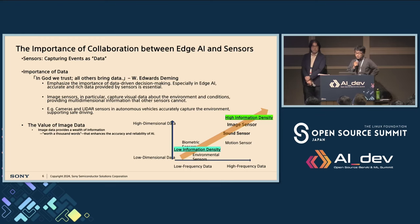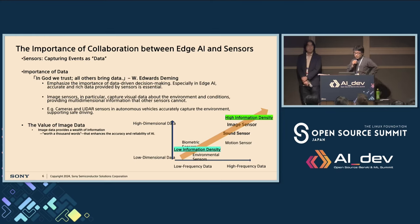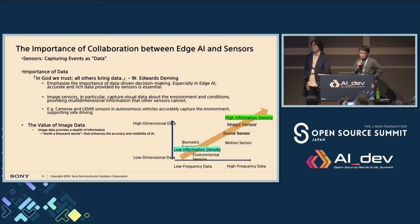I will talk about the importance of working with sensors in edge AI. Accurate and rich data from sensors is essential for AI to function accurately. Sensors detect what happens around things and capture it as data — for example, they create data about the state of the environment, movement, temperature, and so on. This data provides a basis for AI to make decisions and affects their accuracy.